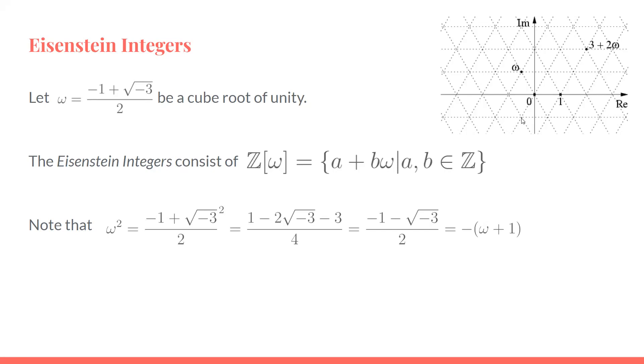So this point down here, ω², is also part of the Eisenstein integers. This ends up forming a triangular lattice on the complex plane where any of these intersecting points can be represented as an Eisenstein integer.